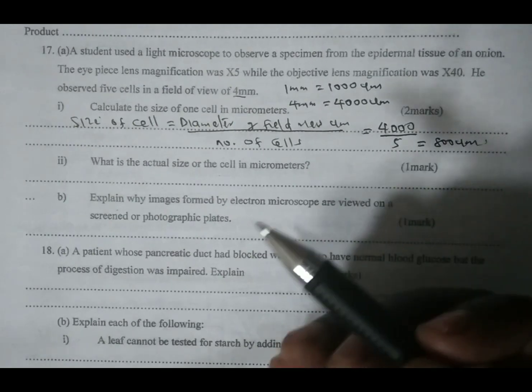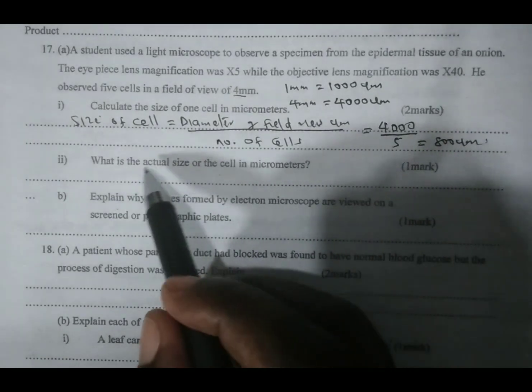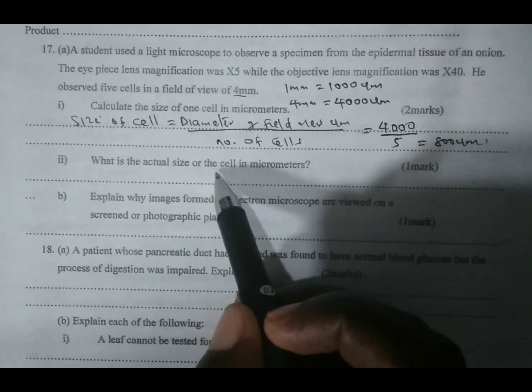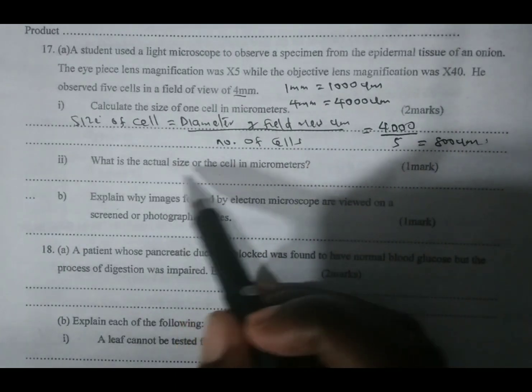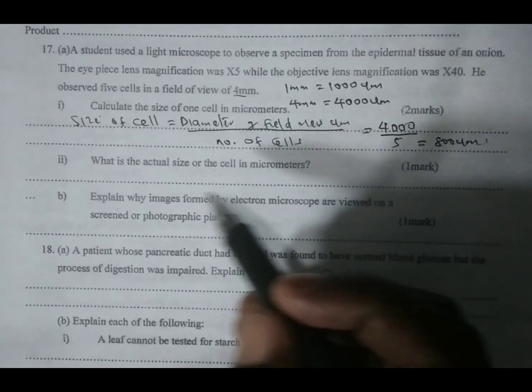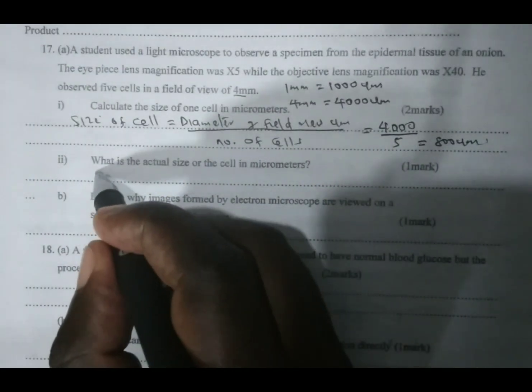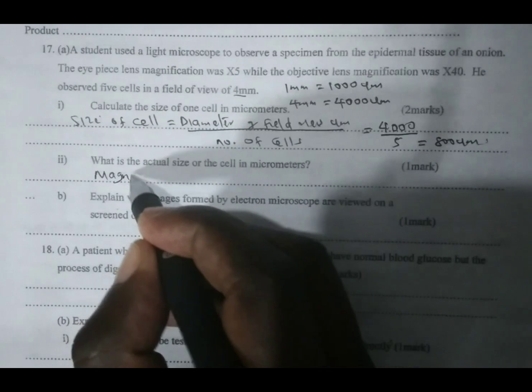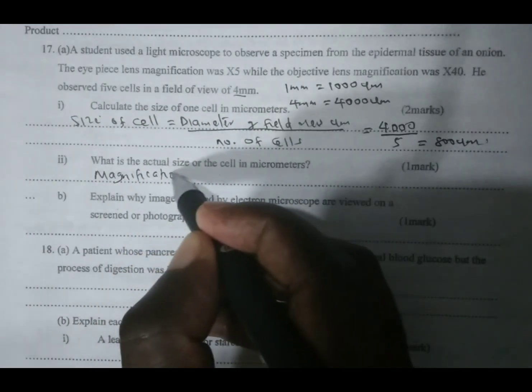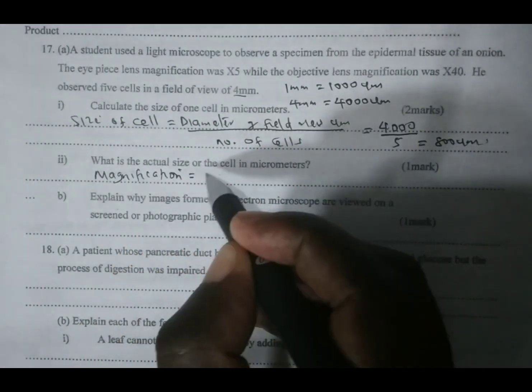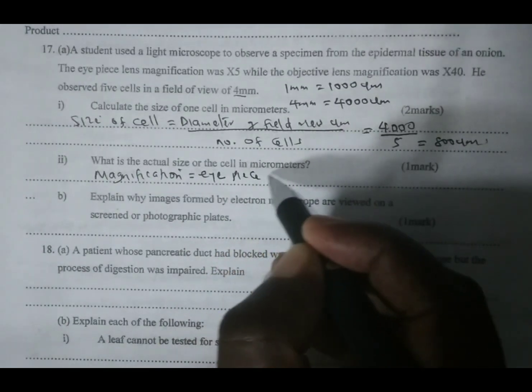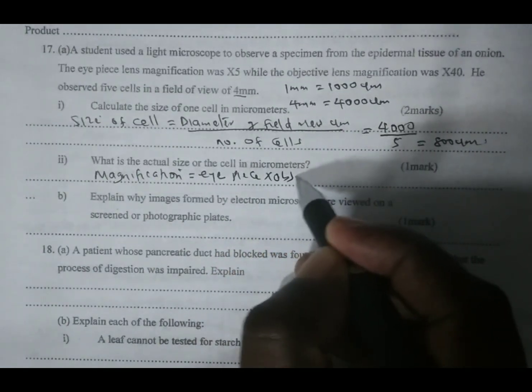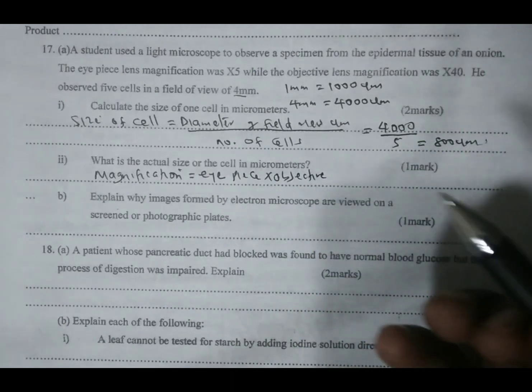Roman 2 says: what is the actual size of the cell in micrometers? For us to get the actual size, we must first get the magnification. To get the magnification under the light microscope, we take the eyepiece magnification and multiply by the objective lens magnification.